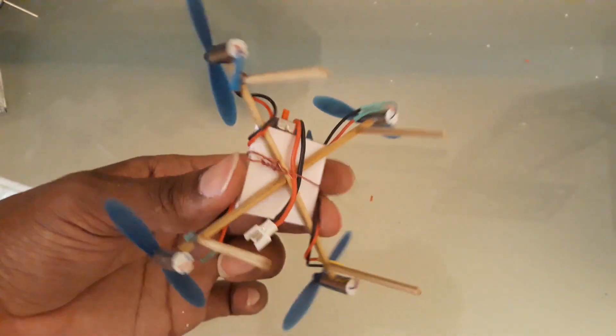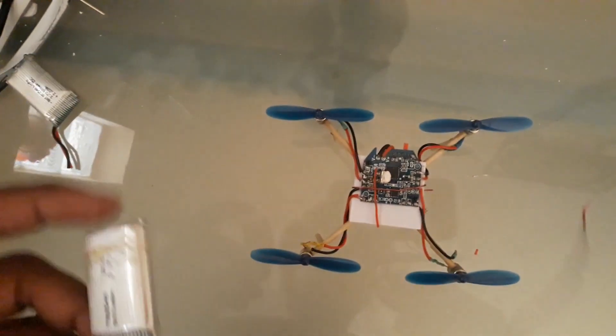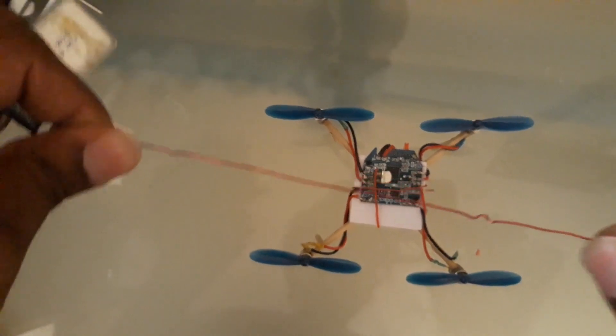I have added some sticks at the bottom for the stand. Next, I am adding the battery. I am using a 600mA 3.7V LiPo battery. I am using insulated copper wires to secure the battery in place.